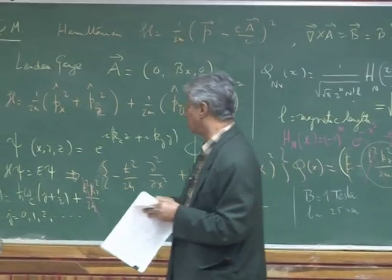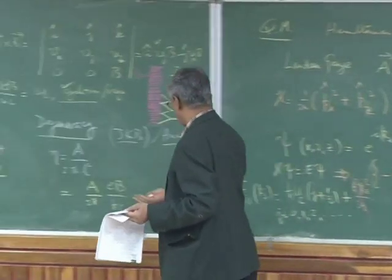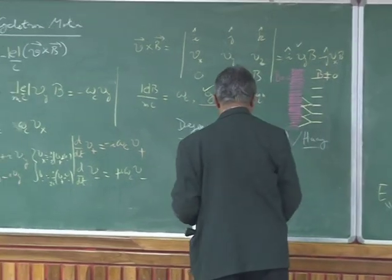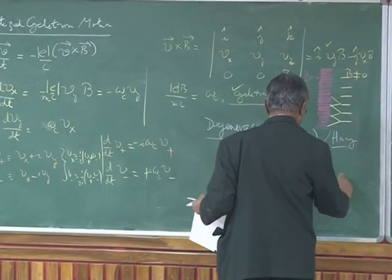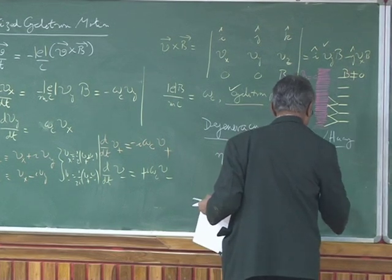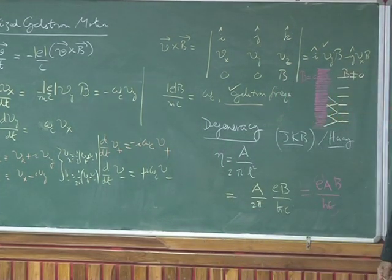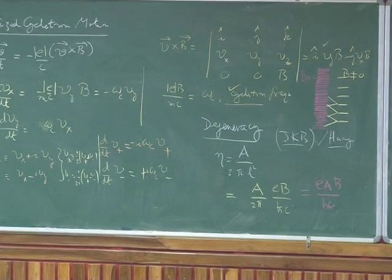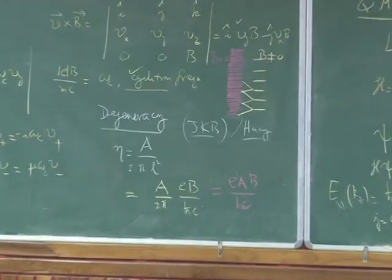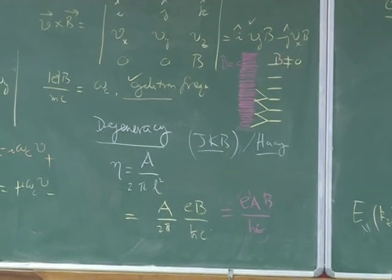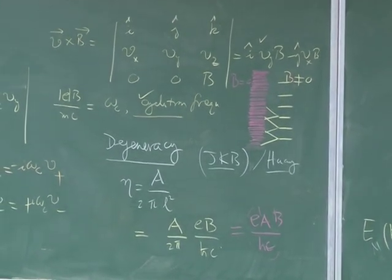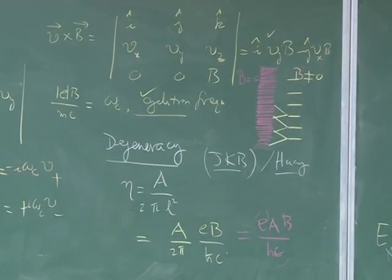So h bar 2 pi will simply be H, so some textbooks also write it as BA over Hc. And this is also related to the fine structure constant and magnetic flux, so you'll see signatures of quantum Hall physics coming in.